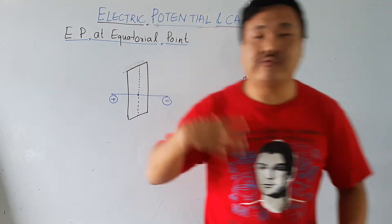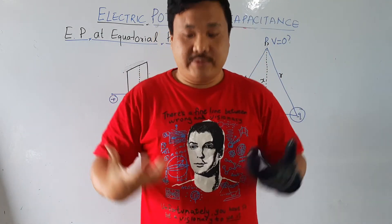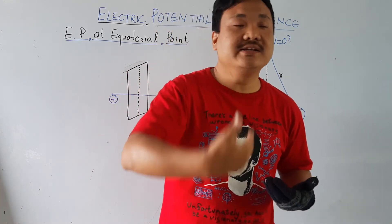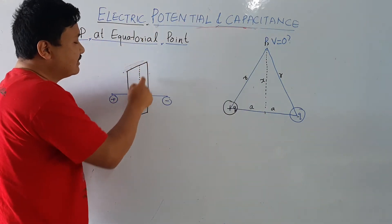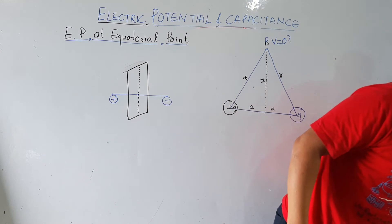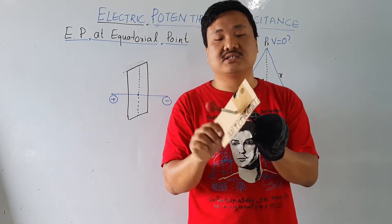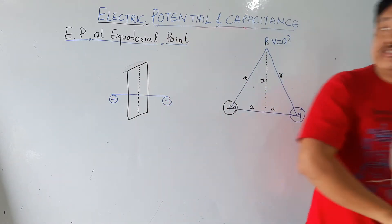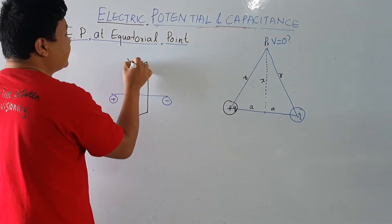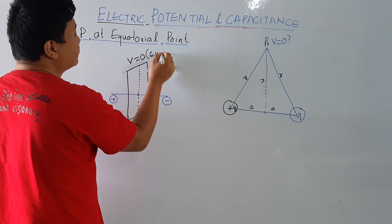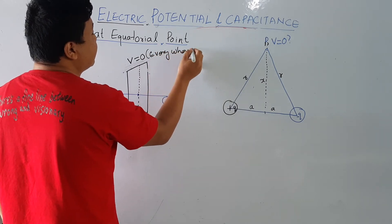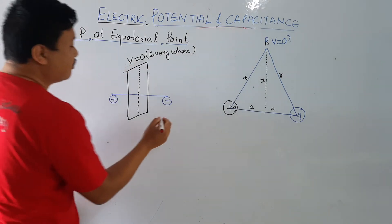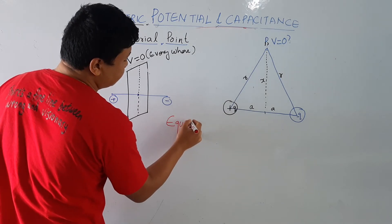So you have one charge here and another charge here. Between these two charges, at the middle you make a plane, and everywhere on that plane the electric potential is zero. The potential V is zero everywhere on this surface. This kind of surface where the potential is zero everywhere is called an equipotential surface.